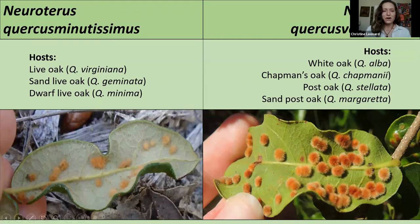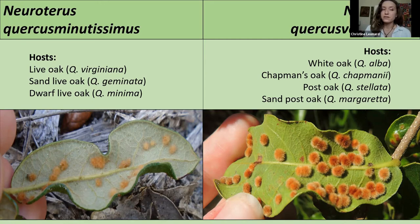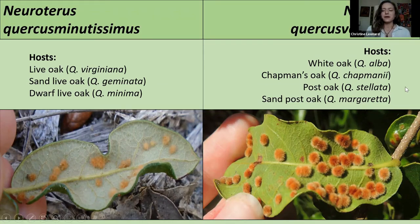Another slide on gall wasp species: these two Neuroterus species — Quercus minutissimus and Quercus verucarum — look very, very similar and grow in very similar spots on the leaf. If you know whether you're looking at a sand live oak or live oak, that's usually the Quercus minutissimus species. But if you're looking at something like post oak, Chapman's oak, or a white oak, then you're looking at the Quercus verucarum species. Depending on the age of the gall, they might be brown, white, or even pink, which is quite fun. I always find myself looking under oak leaves whenever I pass by a nice little oak.